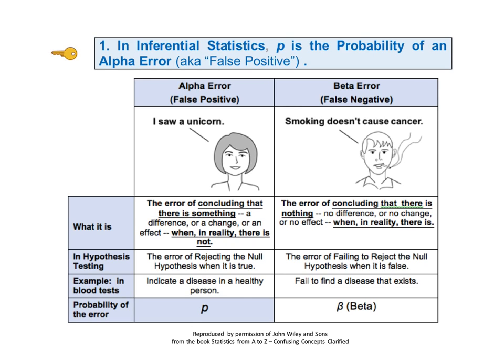For example, in a blood test, a positive conclusion means that there is a disease present. If in fact there is not, that would be an alpha error.